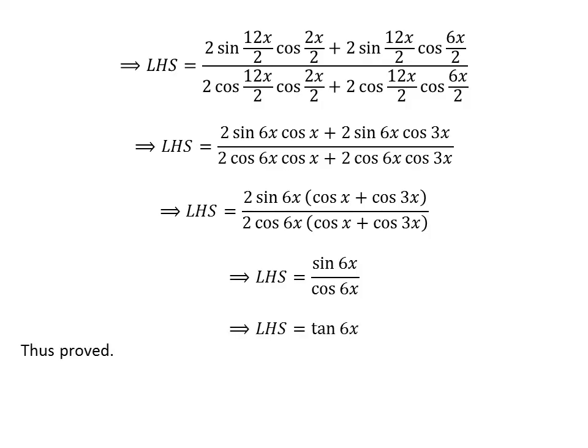Since sine of 6x upon cosine of 6x is equal to tangent of 6x, the left-hand side of the equation equals tangent of 6x, which is equal to the right-hand side of the given equation. Hence, the equation is proved.